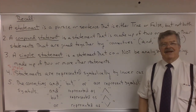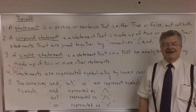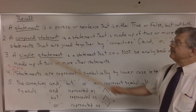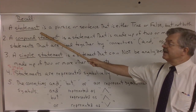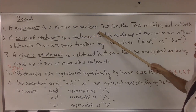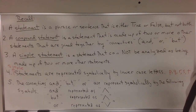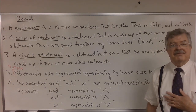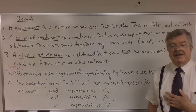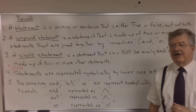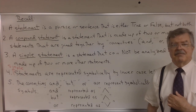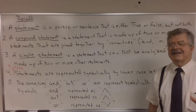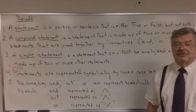Hi, finite math people and welcome to our second lecture on logic. Let's just review what we did in the first lecture. We defined something called a statement, and we said that a statement is a phrase or a sentence that is either true or false but not both. For example, the sentence 'I am 27 feet tall' is a statement because either it's true or it's false that I am 27 feet tall, and it can't be both.